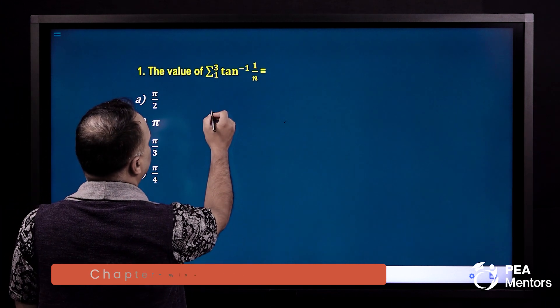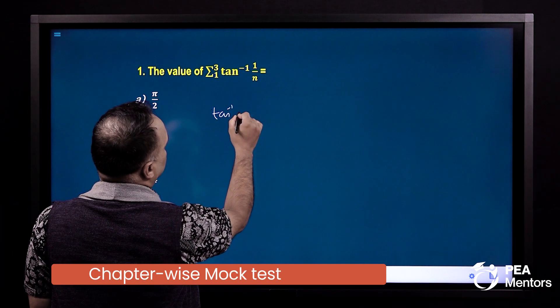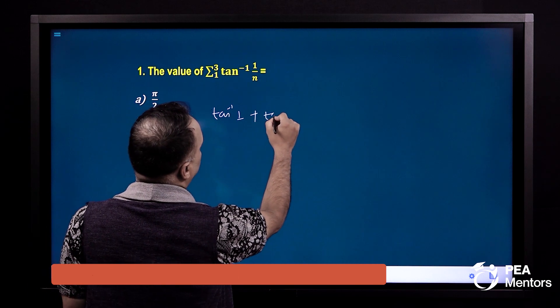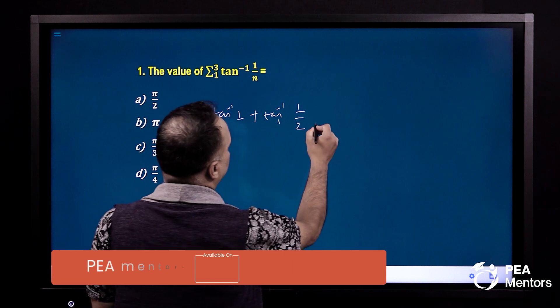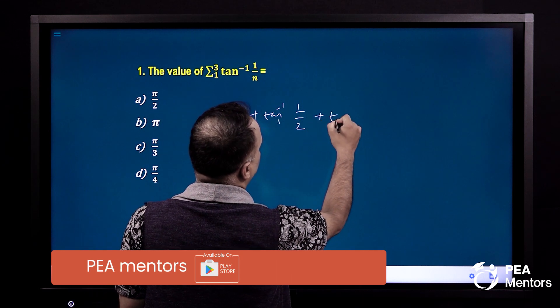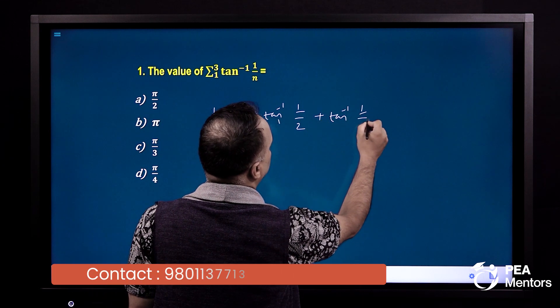Yaston chare ho? Yastla hai. tan inverse 1 rakhda 1 bayo plus 2 rakhda tan inverse 1 by 2 bayo. Yaston chare ho?